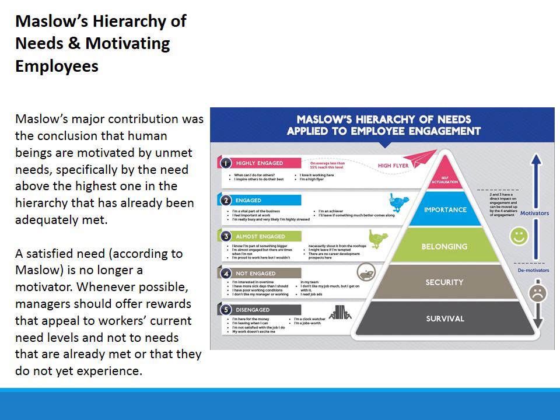Then you have that third level of belonging. You know you're part of something important. You're almost engaged, but you're not 100% there. You're proud of your work, but you're not necessarily ready to shout it from the rooftops. And you might leave if you're tempted by some career development options that come down the pike. Then there's importance — this is when an employee is truly engaged. They feel like they're a vital part of the business, they feel important at work, they are busy and very likely a little bit stressed. They are an achiever, and they would probably leave if something better came along.